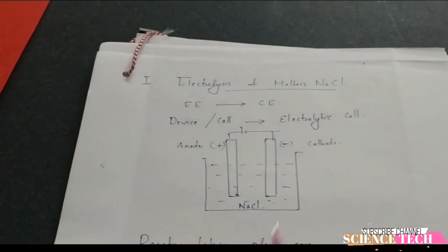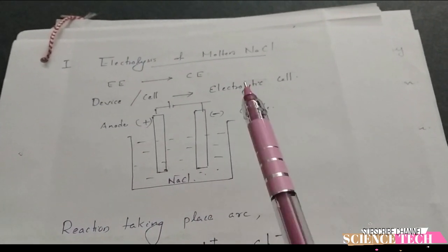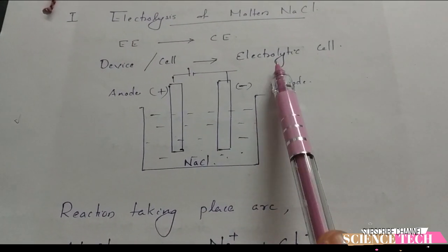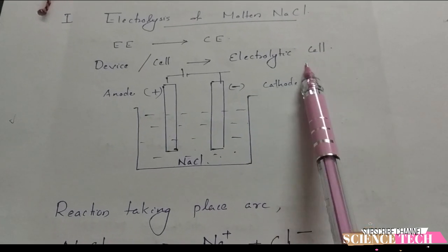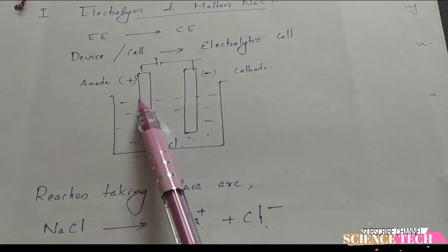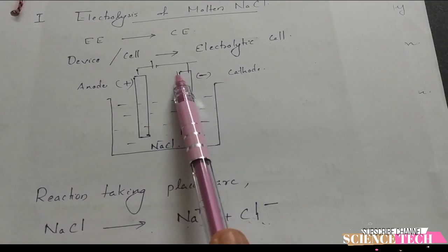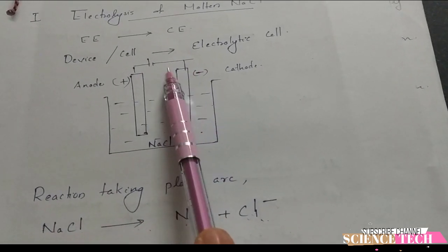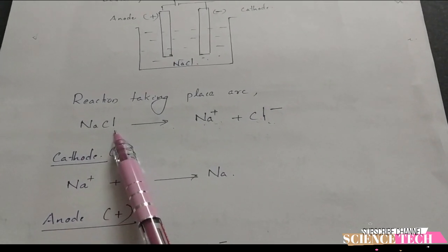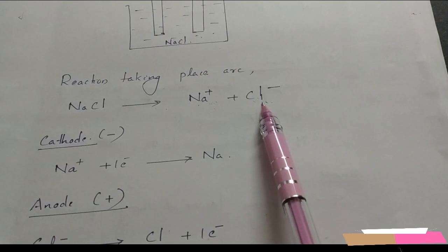Now let's look at the Electrolysis of Molten Sodium Chloride. In the electrolytic cell, Electrical Energy is used to bring about a Chemical Change. When sodium chloride is molten, it dissociates into Na+ and Cl- ions, which act as charge carriers in the cell.